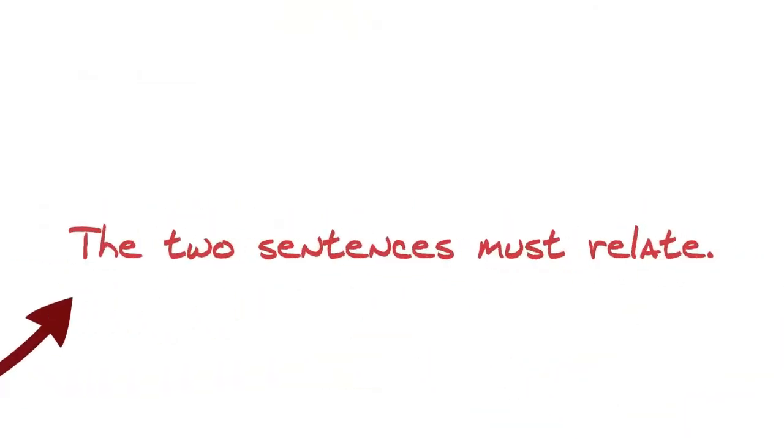There are a few things to remember when merging simple sentences using a coordinating conjunction. First, the two complete thoughts in a compound sentence must be about the same things. They need to relate.